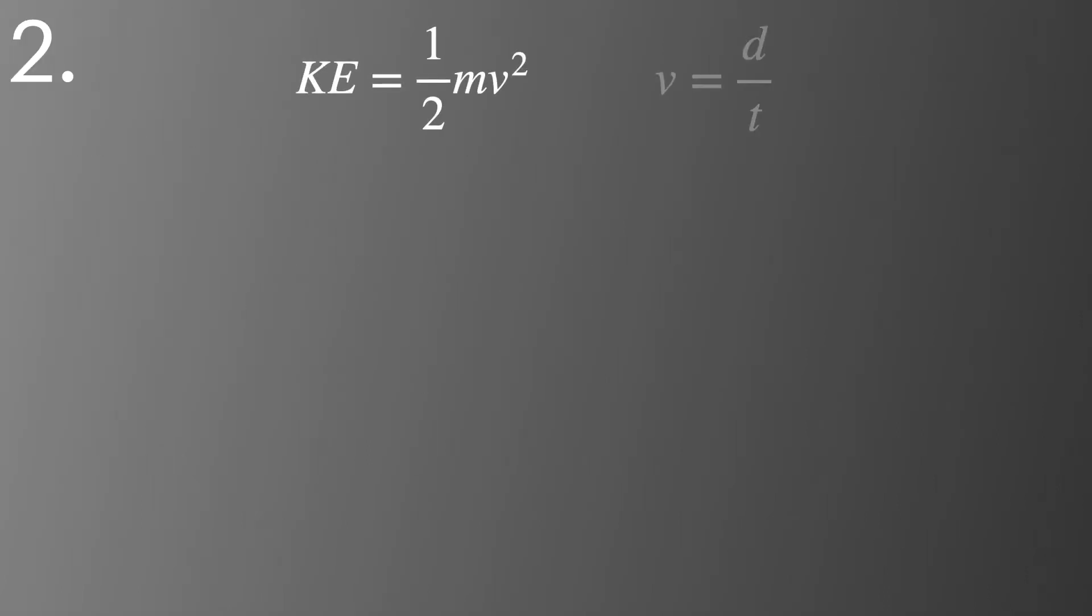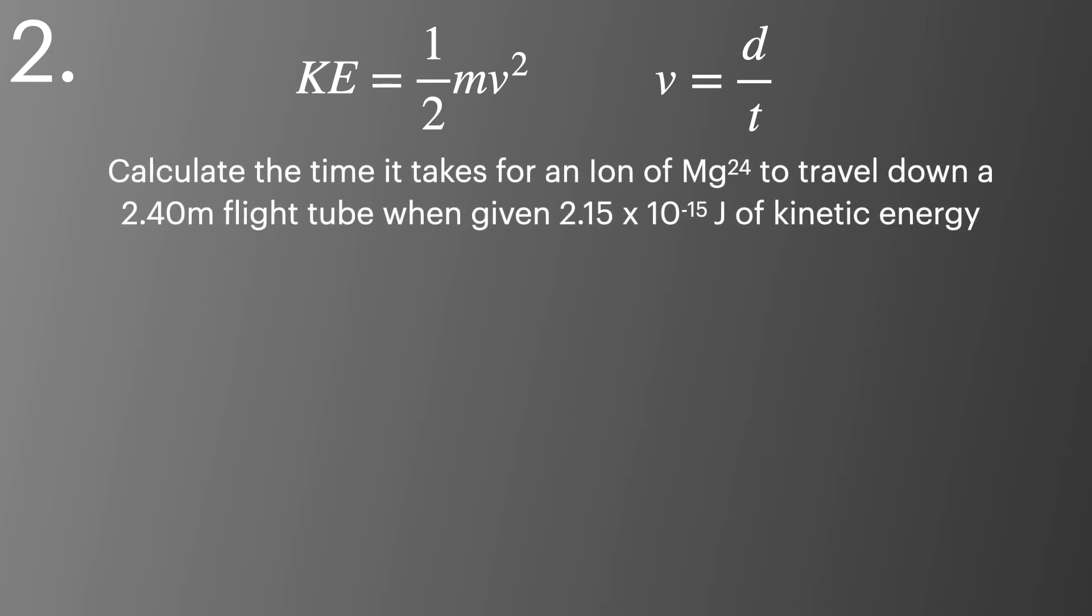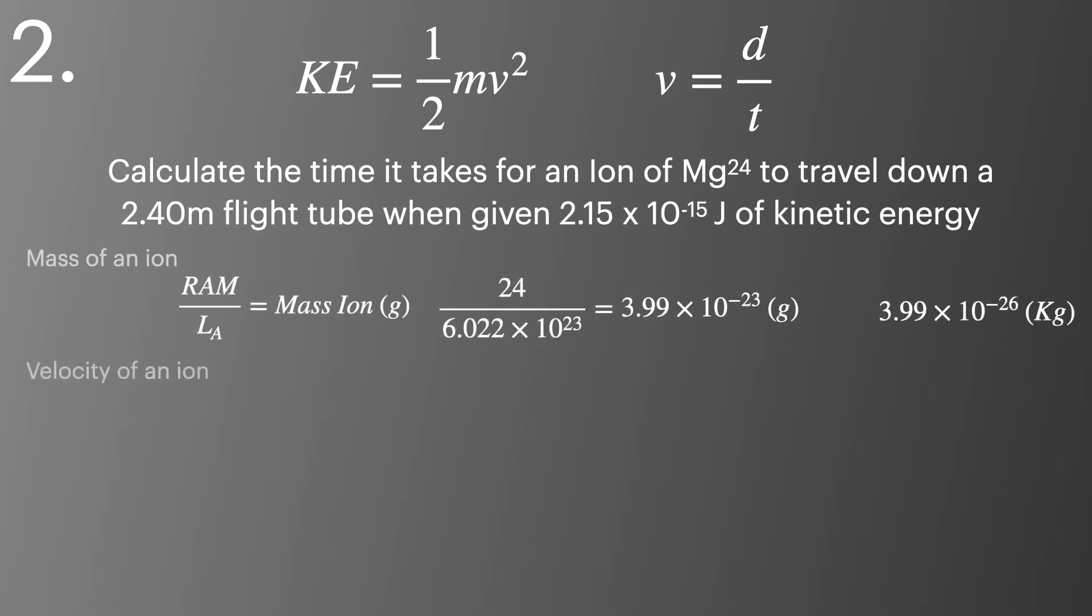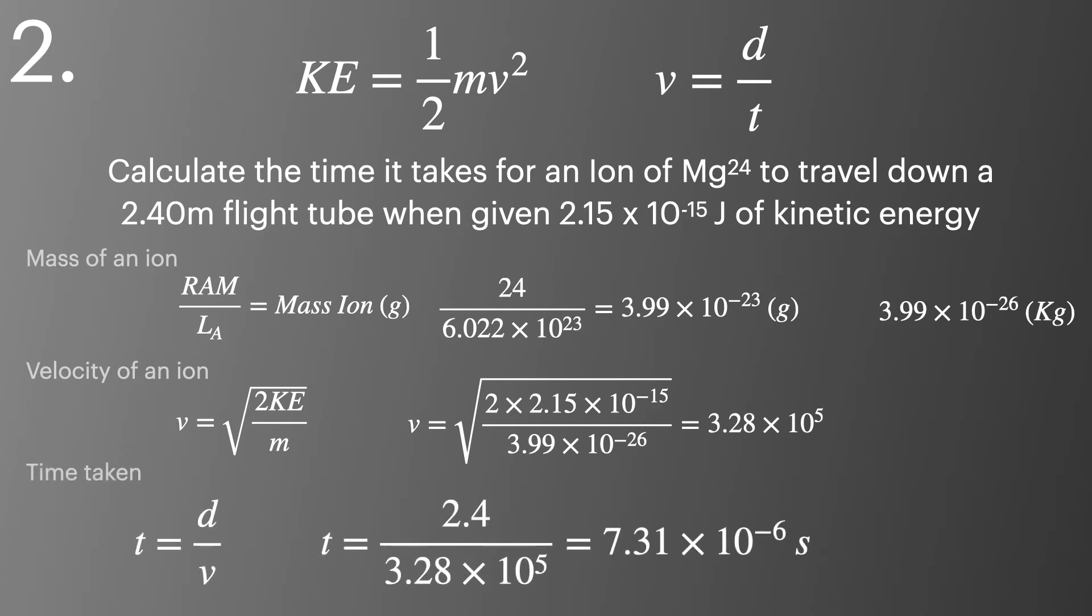The second type of question is more complex and involves using both the kinetic energy equation and the equation for velocity. In this example we're given the relative atomic mass, the kinetic energy, and the distance of the flight tube. We'll first calculate the mass of the ion using the method described earlier, and then we'll calculate the velocity of the ion. This is the same process we just looked at and involves the rearrangement of the kinetic energy equation. Finally we'll use the equation for velocity rearranged to allow us to calculate the time from the distance given in the question.